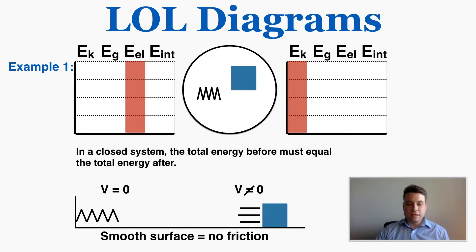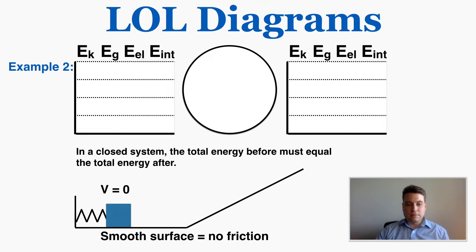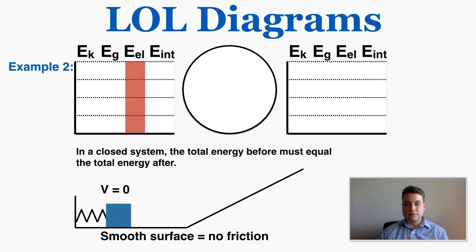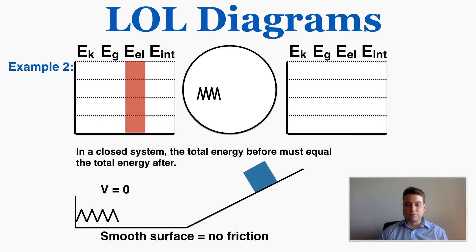Here's example number two. We can imagine that the box is compressing a spring still, but it's now facing a ramp. It does not have any gravitational potential energy to start, so all of that energy must still be elastic energy contained within the spring. We let it go, and it goes a certain height up the ramp before coming to a stop.